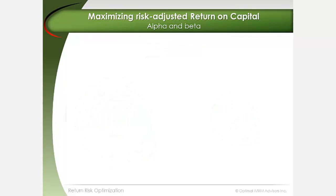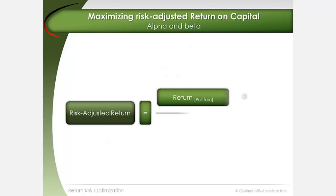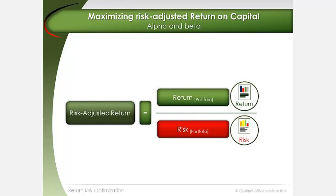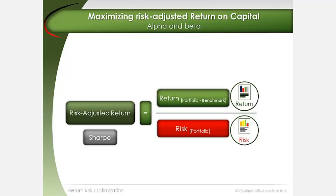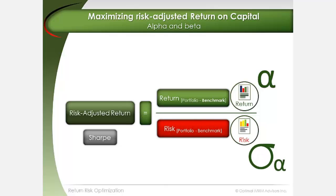A simple expression of risk-adjusted return is a ratio of portfolio return to portfolio risk, also referred to as the Sharpe ratio. A more complete expression of this formula is portfolio return minus benchmark return — known as excess return or alpha — divided by the volatility of this excess return or alpha. Variations of this expression include the Treynor and Sortino ratios.